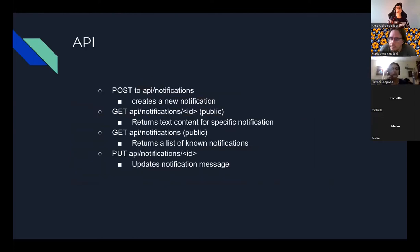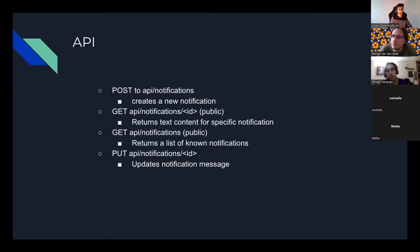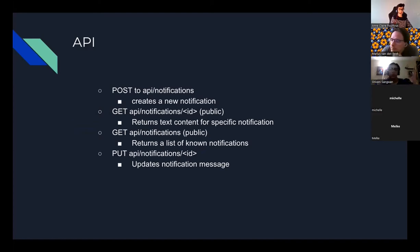Discussing the API: we have implemented four routes. First, a POST to API/notifications to create a new notification. Second, a GET to API/notifications/{notification_ID} to retrieve the content and message of a specific notification. Third, a general GET to API/notifications that returns the top 10 notifications in the system. Fourth, a PUT to update message content in a notification, which can also be enhanced to verify that a user has seen the notification via PUT to API/notifications/{ID}.